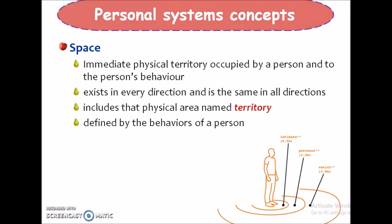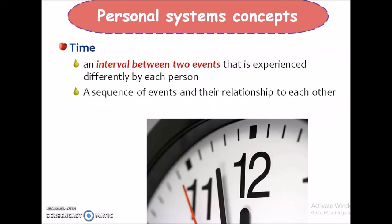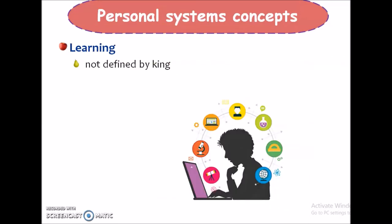The immediate physical territory occupied by a person and related to the person's behavior is considered space in this model. Space exists in every direction and includes the physical area defined by a person's behavior. Time is an interval between two events experienced differently by each person; a sequence of events and their relationships are influenced by time. Learning is mentioned but not defined by King in the theory.